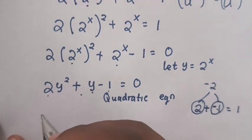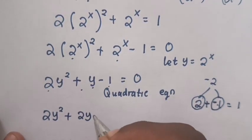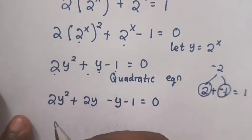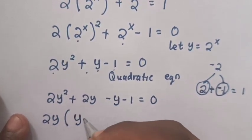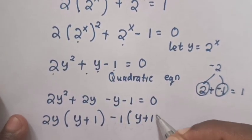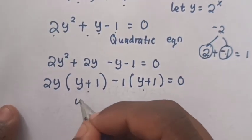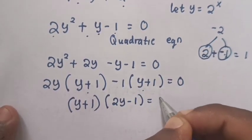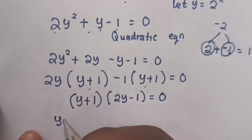So it becomes 2y squared plus 2y minus y minus 1 equals 0. Factoring gives 2y out of the first pair and negative 1 out of the second, yielding bracket y plus 1, so we have bracket y plus 1 bracket 2y minus 1 equals 0.